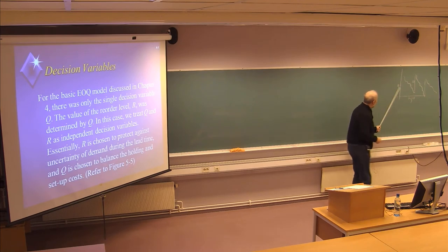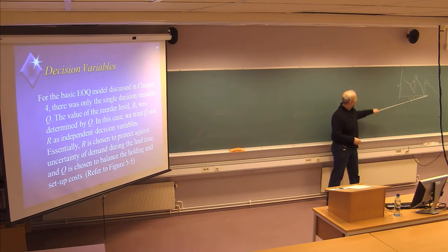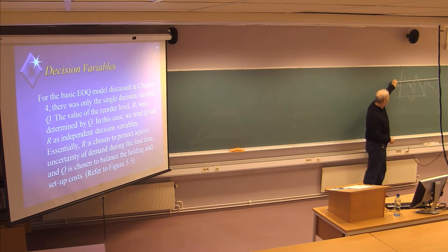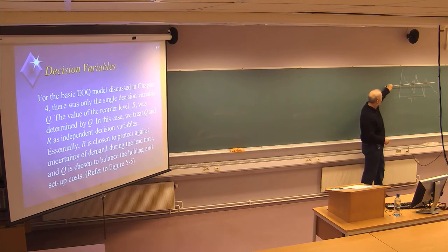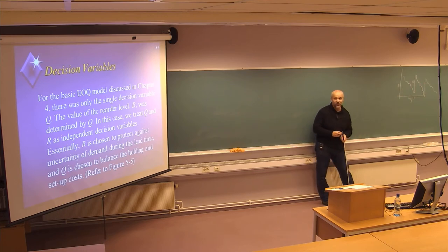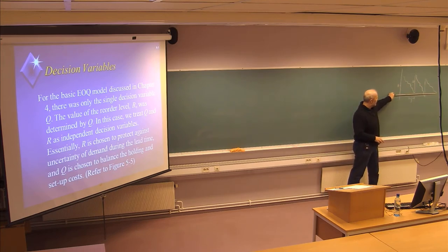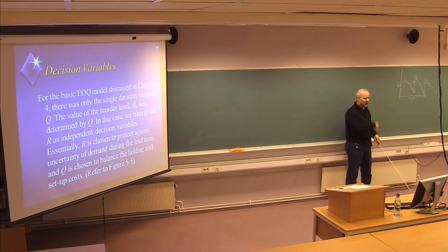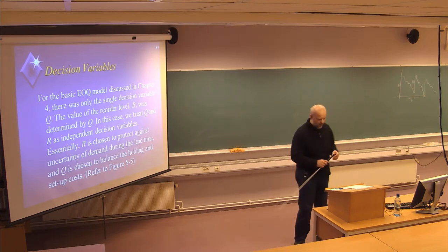If you have a high reorder point, you can raise this graph and the probability of getting a stockout will be very low. If you have a low reorder point, the probability of a stockout will be pretty high. The reorder point also determines the size of the safety stock, which is defined as the average level of stock when you receive a new order. On top of the safety stock cost, you have the traditional cyclic inventory cost.